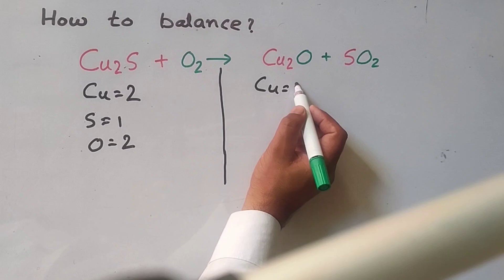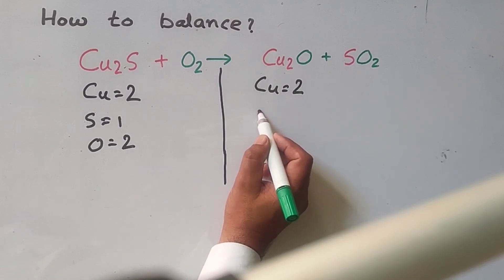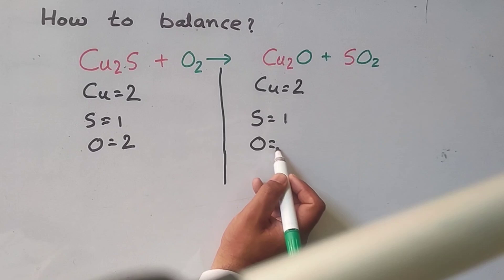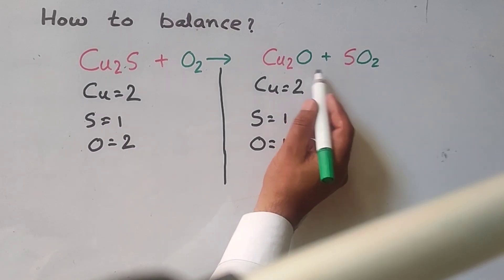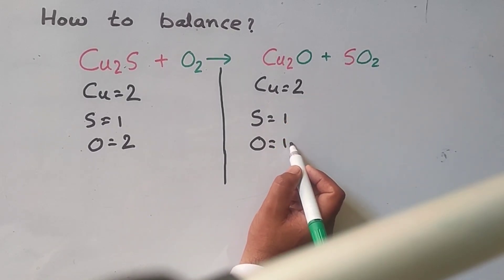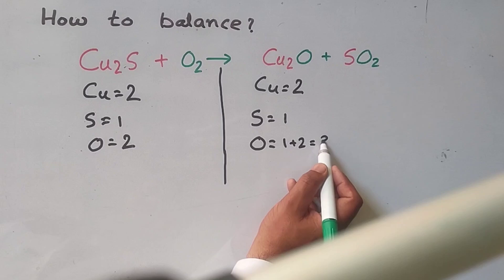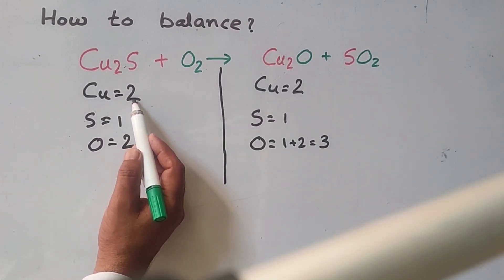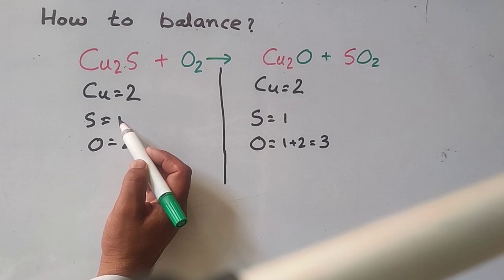On product side, copper atoms 2, sulfur atoms 1, oxygen atoms 1 here and 2 here, total 3 oxygen. Copper atoms are already balanced, sulfur atoms are balanced.